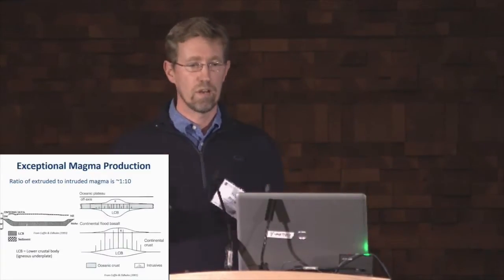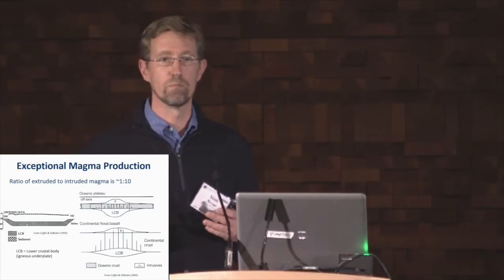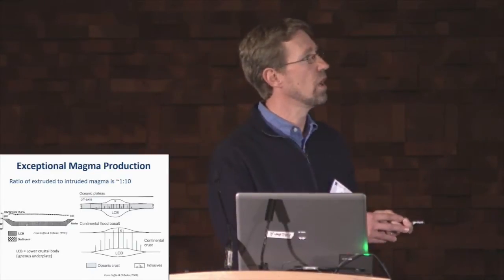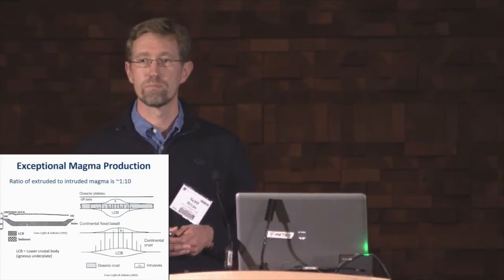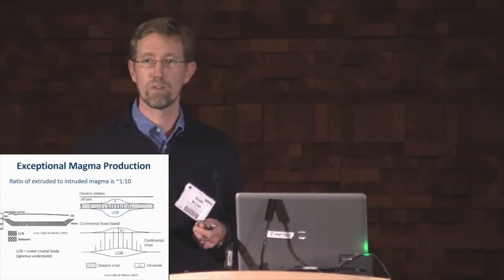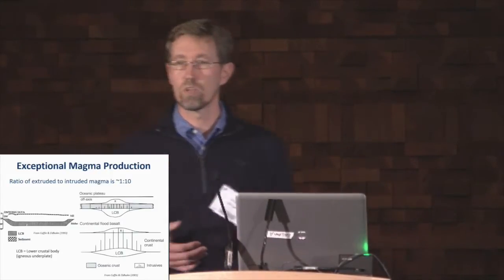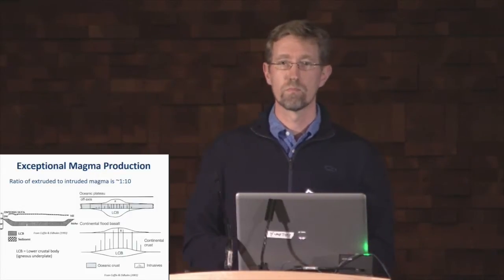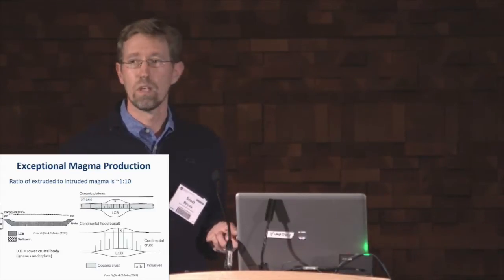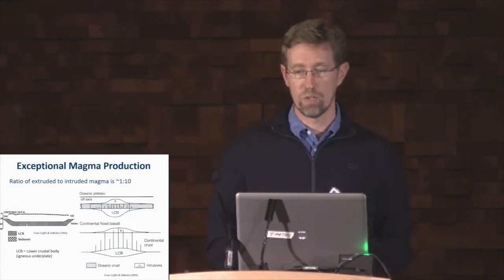Something less appreciated is that in addition to this tremendous erupted volume, there's an even more substantial intrusive volume, stored as intrusions throughout the crustal profile and as igneous underplate. We can see this intrusive volume very well for the oceanic plateaus, where the typical oceanic crustal thickness of about seven to eight kilometres balloons out to 30 to 40 kilometres thick beneath them. The ratio of extruded to intruded magma is estimated at about one to ten, and this intrusive volume can also contribute through degassing to substantial volatile emissions to the atmosphere.